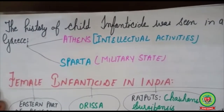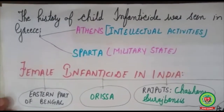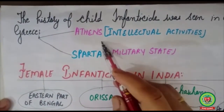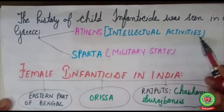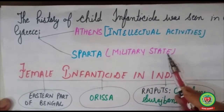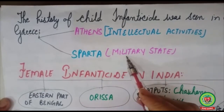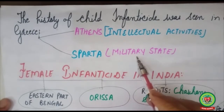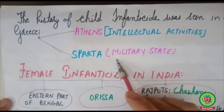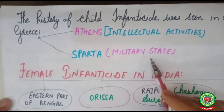The history of child infanticide was seen in ancient Greece, especially in the two states of Athens and Sparta. Athens was famous for intellectual activities, whereas Sparta was a military state. In Sparta, if a child was weak, the child was put to death because the people believed that a physically weak child could not serve in the army.